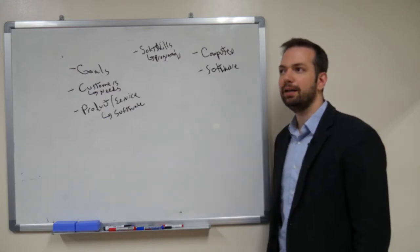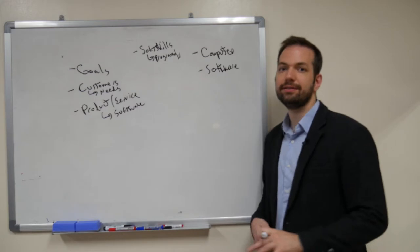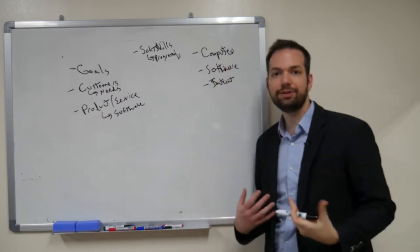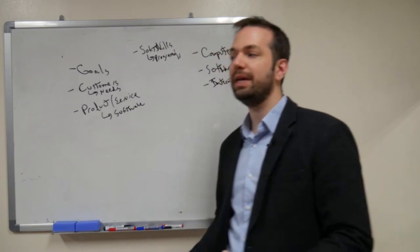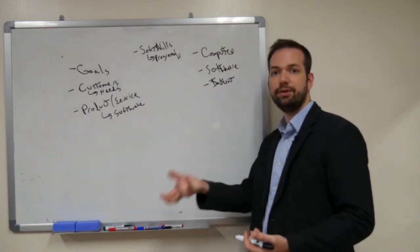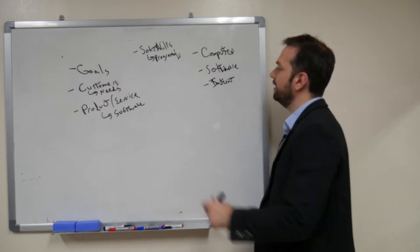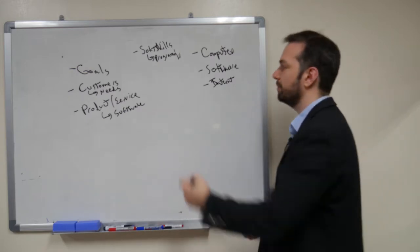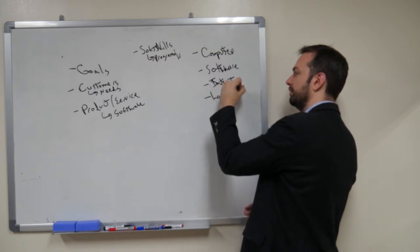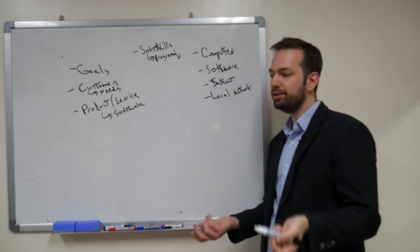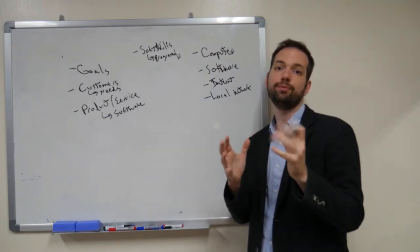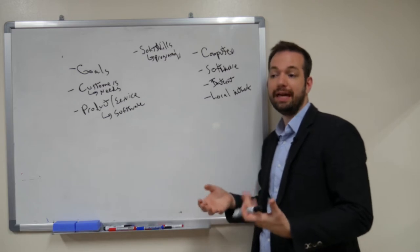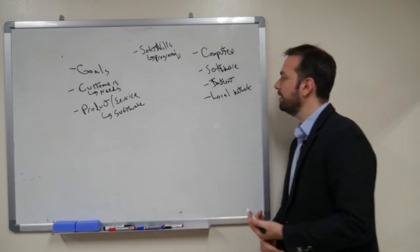A lot of video game companies today actually have a presence online, so they're also going to need the internet — they want to connect with their fans, connect with their users, and be able to distribute information about the video games they're creating. If we have the internet, it also implies that we have some sort of local network. That could just be a basic access point in your home, or for a video game company, maybe something a little more industrial.